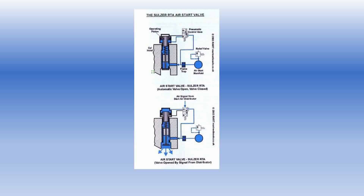The starting air valve for the Sulzer engine has an operating piston which is stepped in nature — there is a smaller piston and there is a bigger piston. Air acts on both sides of the piston during valve operation. Air is obtained from the starting air manifold through a flame trap. There is a pneumatic control valve which gets actuated depending on whether you want to close or open the valve. When opening the valve, the pneumatic valve gets actuated, air enters the top part of the smaller piston, it gets pushed down and the valve opens. When you want to close the valve, the pneumatic control valve gets de-energized; the top part gets vented off and the bottom part gets air, hence the piston gets pushed up and the valve closes.